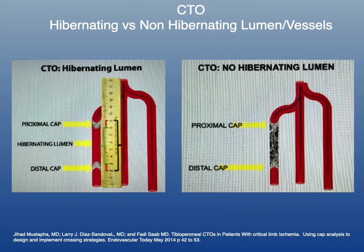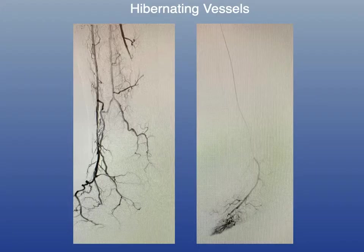The concept of hibernating versus non-hibernating lumen is also very important. Typically when you have a CTO, you have a proximal and distal cap. If the channel in between is open but angiographically occult, that's called a hibernating lumen. If it's occluded from proximal to distal, you have no hibernating lumen, and that is a much tougher recanalization.